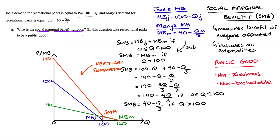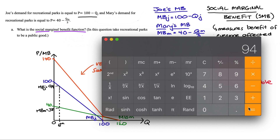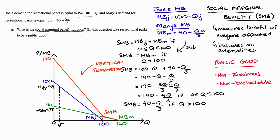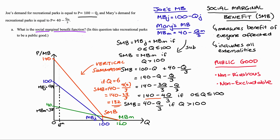We can check our calculations using the sixth recreational park from the beginning of the video. Joe's marginal benefit was 94 and Mary's was 38. Adding those together gives 132. Substituting Q = 6 into our social marginal benefit equation — using the first part since 6 is less than 100 — we get 140 - (4 × 6)/3 = 140 - 24/3 = 140 - 8 = 132. We get the same number, confirming our algebra. This also illustrates what vertical summation does: since we're dealing with a public good, both Joe and Mary benefit from that sixth park, so finding the social marginal benefit means adding their individual marginal benefits together.